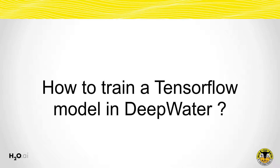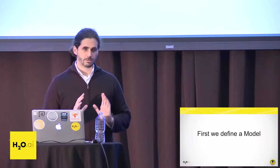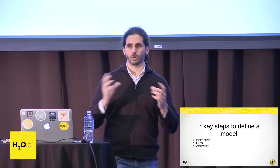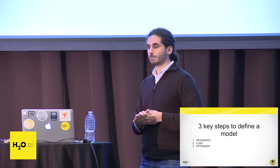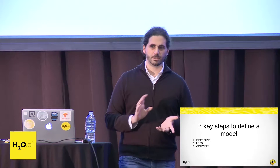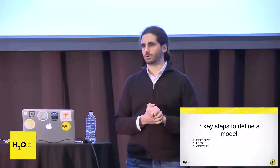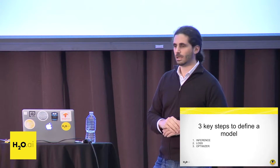So how do you train a TensorFlow model in DeepWater? First, you need to declare a model. To declare a model, there are three key steps that need to be defined. One is the inference step — once the model is created, this is the step that will run over and over doing prediction in an online fashion. To train, you need to define your loss function that you want to optimize. And then you specify which optimizer to use. This is a bit different from existing machine learning algorithms, because before all of this was already pre-selected for you. In deep learning, you have the possibility to create new algorithms, to compose different blocks and create new models.